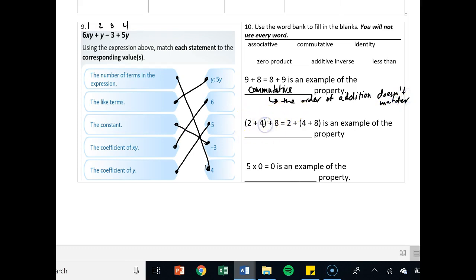When I change the grouping of 2 plus 4 plus 8 equals 2 plus 4 plus 8, that is an example of the associative property. How are you going to show work? You can tell me what the associative property is. You can change the grouping and still get the same answer of addition or multiplication. And 5 times 0 equals 0 is an example of the zero product property. That means anything times 0 equals 0.